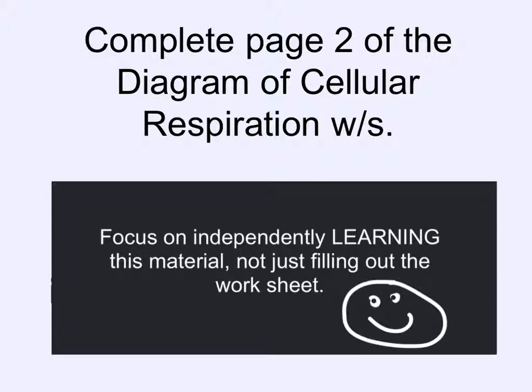At this point, it's time to complete page two of your worksheet. Remember to focus on independent learning of this material, not just filling out the worksheet — try to get it into your brain and absorb it. When you're done with page two, page three asks you to outline the three boxes on the infographic on page one in a different color, then explain each of those boxes in words. When you've written complete sentences and a good explanation of each box, outline them in the same color you used on the front page. That's it for today.